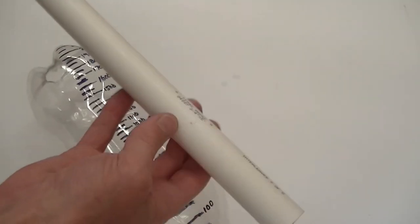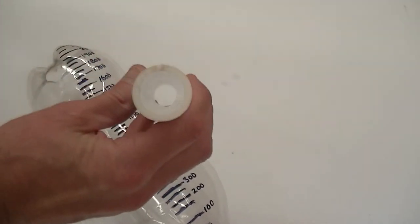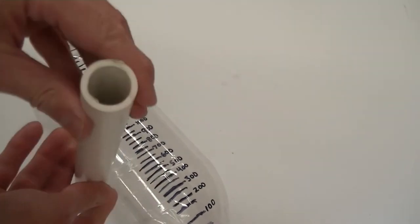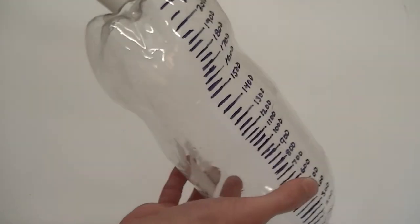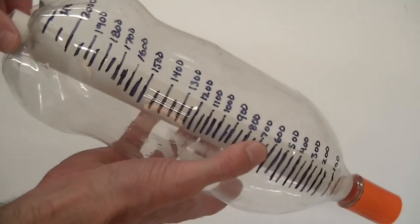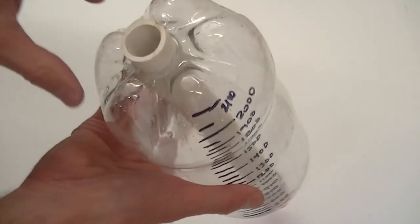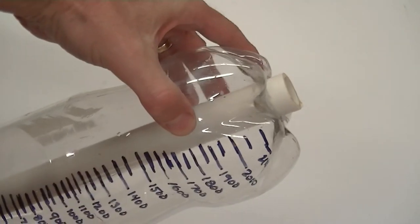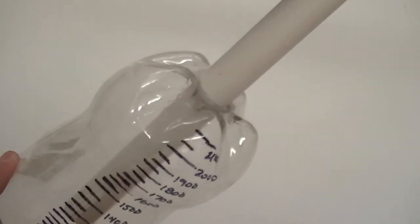I find I get much more consistent results if I control for how the Mentos candy is dropped into the soda. To do this, I use a 1 inch PVC pipe to deliver the Mentos candies into sodas. This method prevents the Mentos candy from rattling around the bottom of the geyser guide before dropping through the tornado tube.